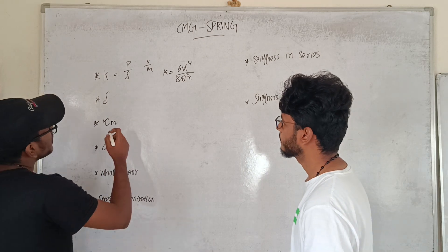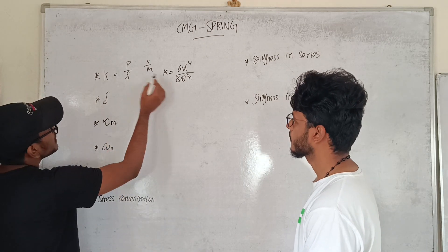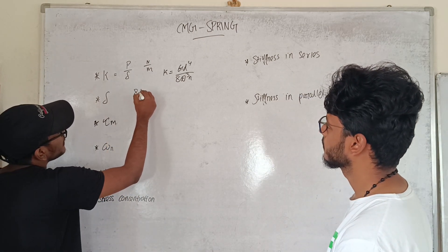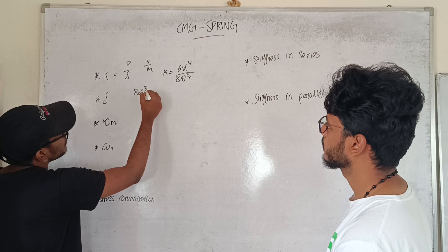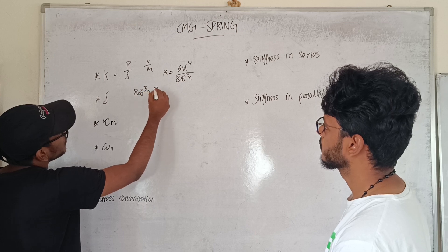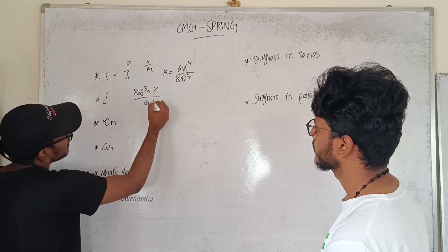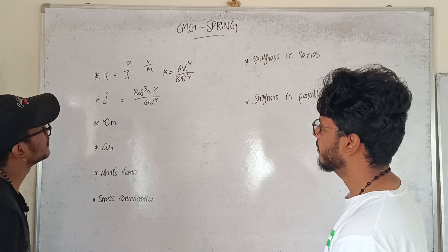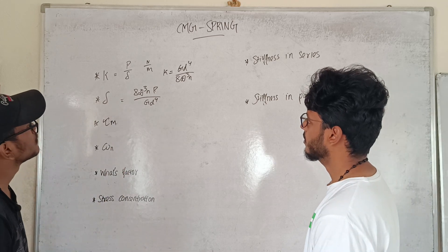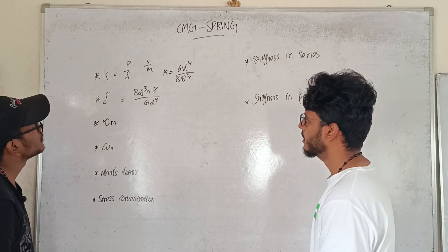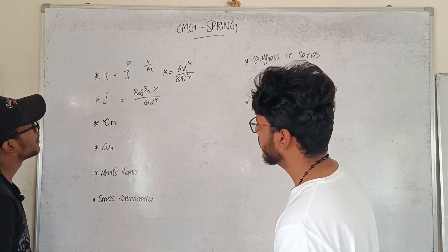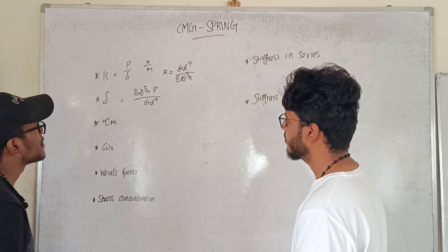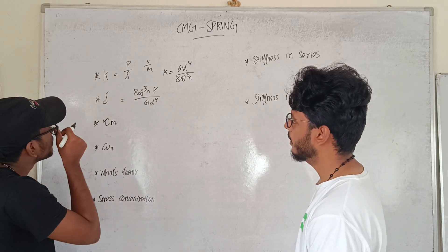The deflection formula: deflection D is equal to D cube terms. M and R is a third, divided by G times D power 4. This is the deflection formula.